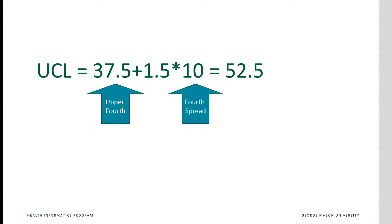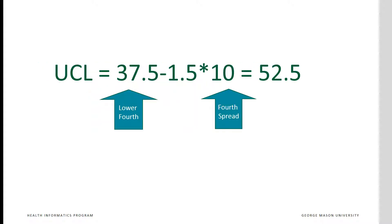The upper control limit is calculated as 37 and a half plus 1.5 times 10, the fourth spread. So we calculate it as 52 and a half. The lower control limit is calculated as 27 and a half minus 1.5 times the fourth spread, which gives us 12.5.